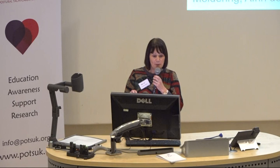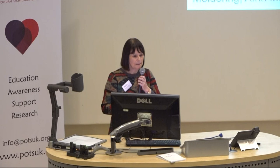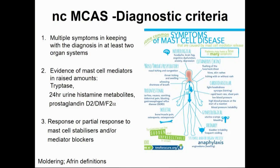Definitions of mast cell activation syndrome, as Alex said, are disputed. So this is the Muldrin or Afrin definitions: multiple symptoms in at least two organ systems, evidence of mast cell mediators in raised amounts, and response or partial response to mast cell stabilisers and/or mediator blockers. These patients have multiple system problems and you need a lot of time to sit down and run through these.